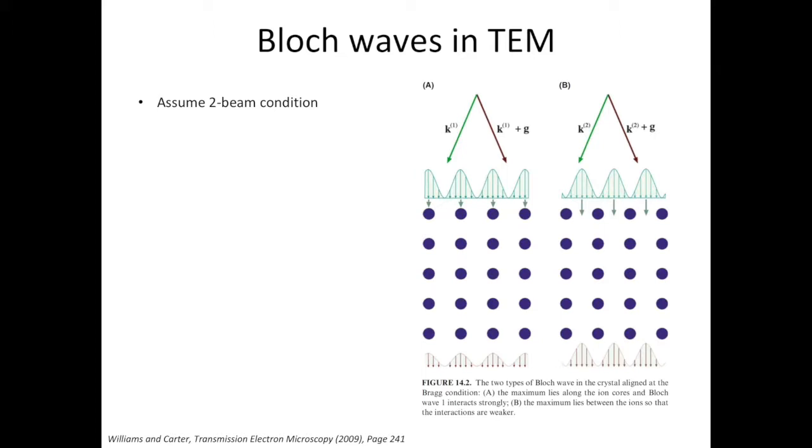Having a closer look at the Bloch waves in TEM, for simplicity we assume it's a two-beam condition. As the electron beam travels through the crystal, we'll have two pairs of Bloch waves. The first pair is k1 and k1 plus g, the second pair is k2 and k2 plus g. k1 and k2 represent the transmitted beam, k1 plus g and k2 plus g represent the diffracted beam. So we have four Bloch waves in total under the two-beam conditions. Each is a solution to the Schrödinger's equation.